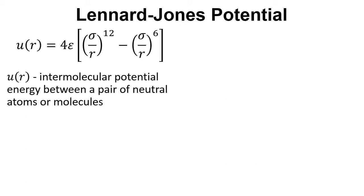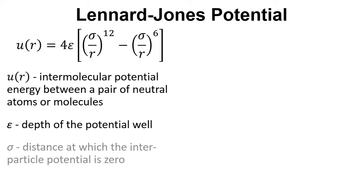We've got U of R, which is the intermolecular potential energy between a pair of neutral atoms or molecules. Then we've got epsilon, which is the depth of the potential well. Sigma is the distance at which the interparticle potential is zero, and then we've got R, the distance between the particles.